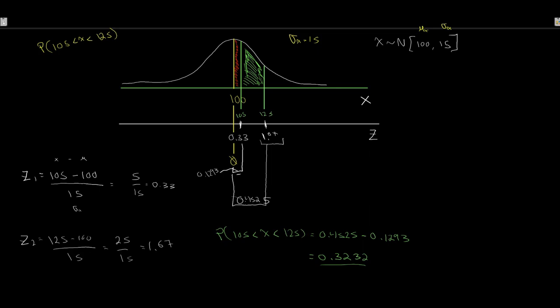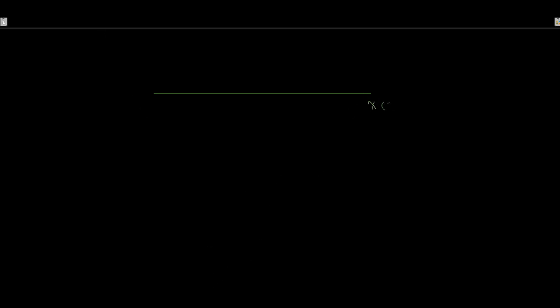We've looked at how to find probabilities when x is greater than some value, and when x is between two values on the same side of the mean. Now let's take a look at what happens when we can't bridge that mean — when our two values are on different sides of the mean. Let's set up one more example. We have our x-axis representing income, where x is normally distributed centered around 45,000 with a standard deviation of 15,000. Let's express income in thousands of dollars to keep it simpler.